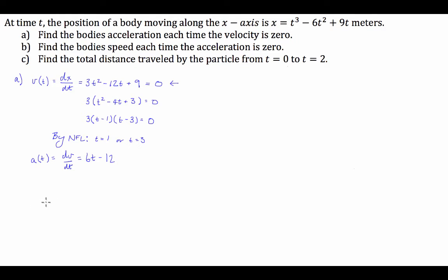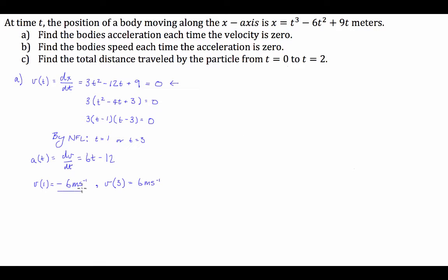To finalize part A, we substitute t = 1 into the acceleration equation: a(1) = 6(1) - 12 = -6 meters per second squared. We also find a(3) = 6(3) - 12 = 18 - 12 = 6 meters per second squared. That's our solution to part A.